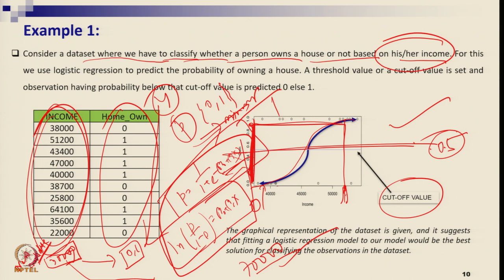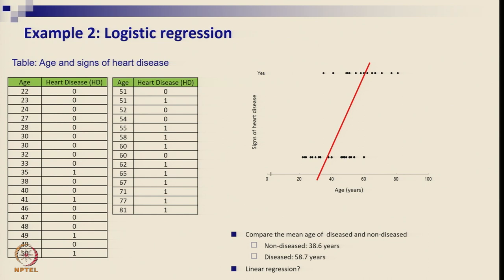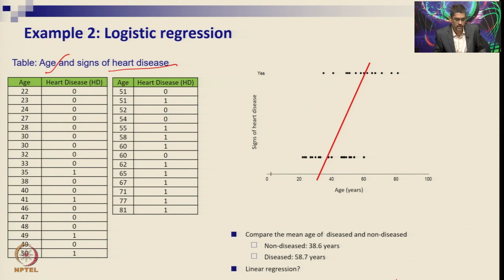Now let us understand a larger application. Suppose we study the relationship between age and signs of heart disease using logistic regression. Here, age data are collected as the sample. You need more samples in logistic regression than in simple regression — even with 10 to 12 samples you can use simple linear regression, but logistic regression requires more.